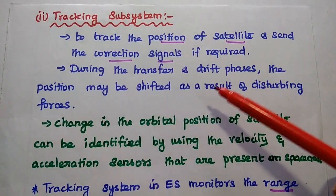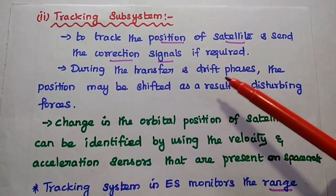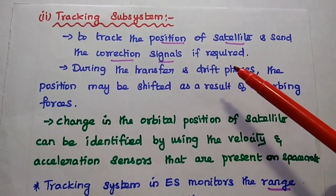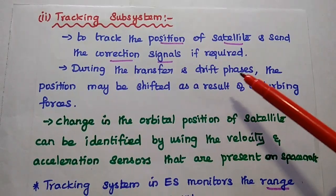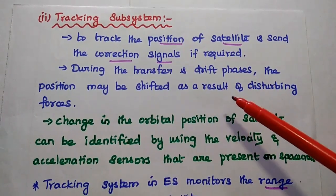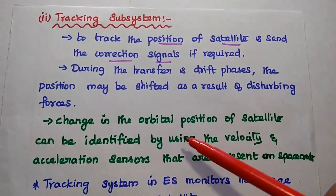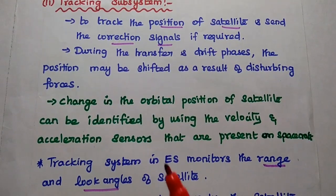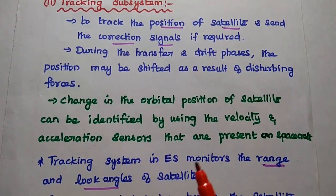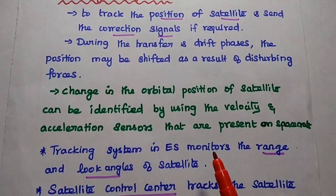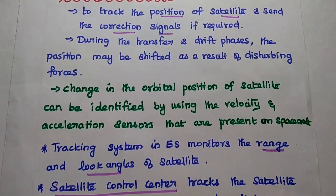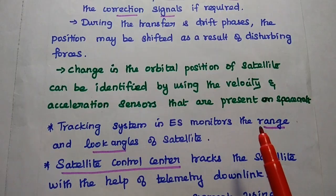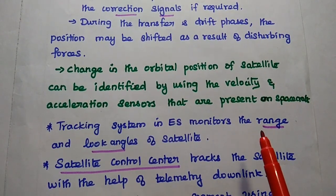The tracking system is mainly used to track the position of the satellite and send corrective signals if required, because during the transfer and drift phases of the satellite launch, the position may be shifted as a result of disturbing forces, causing some orbital change in the satellite path. Changes in the orbital position of the satellite can be identified using the velocity and acceleration sensors present in the satellite, and this information is sent to the earth station using the downlink telemetry signal.